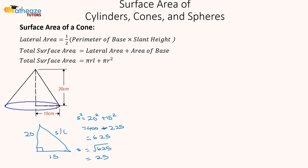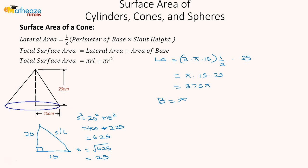Now let's calculate the lateral area. The lateral area is the perimeter of the base, which is 2π times 15. We take half of that and multiply by the slant height, giving us π times 15 times 25, which is 375π. The area of the base is πr squared, which is π times 15 squared, which is 225π.